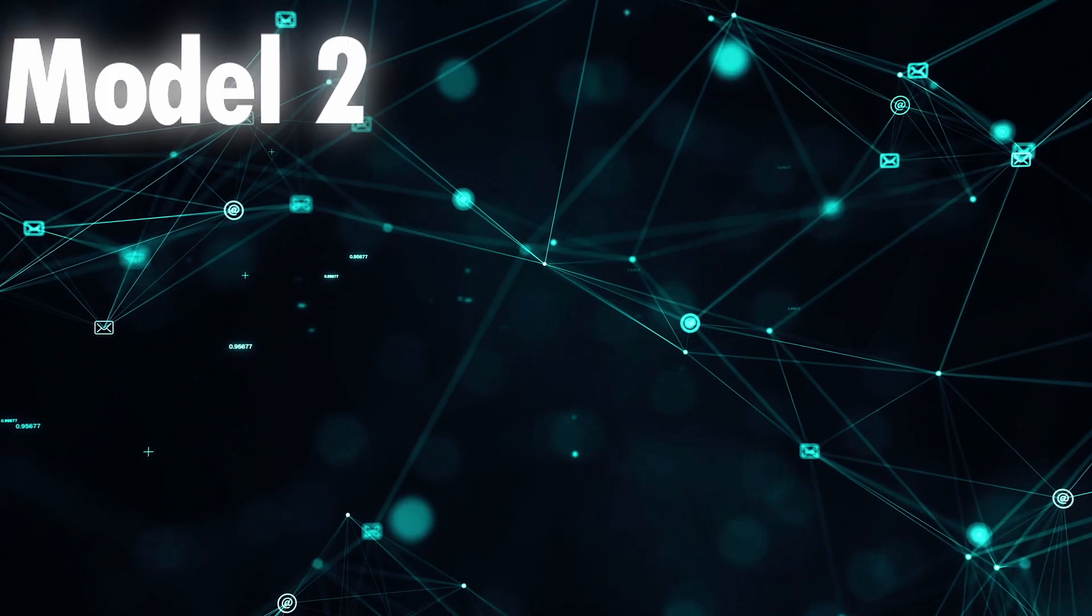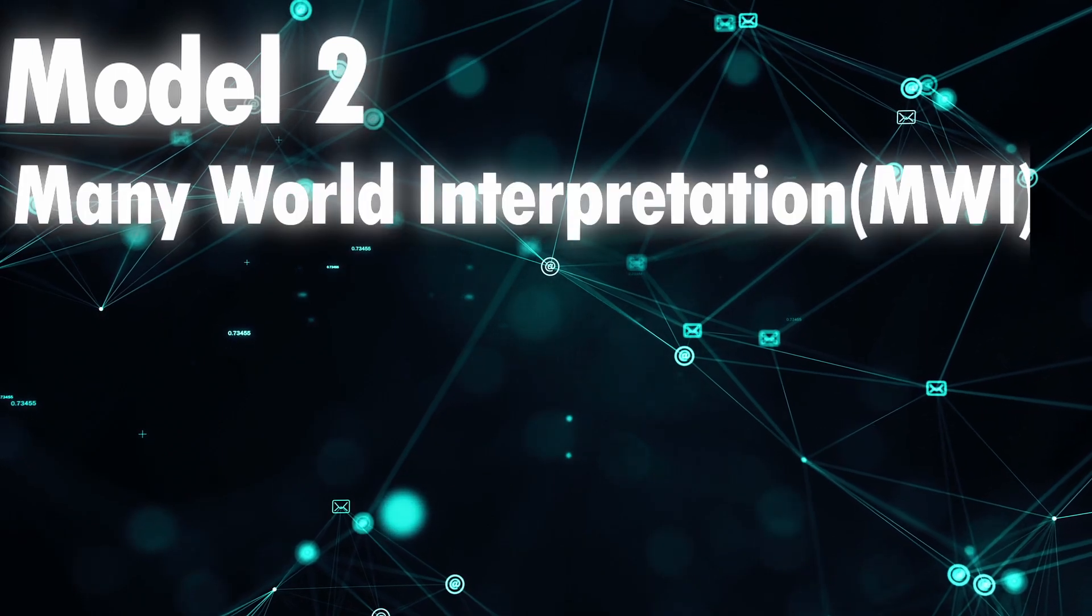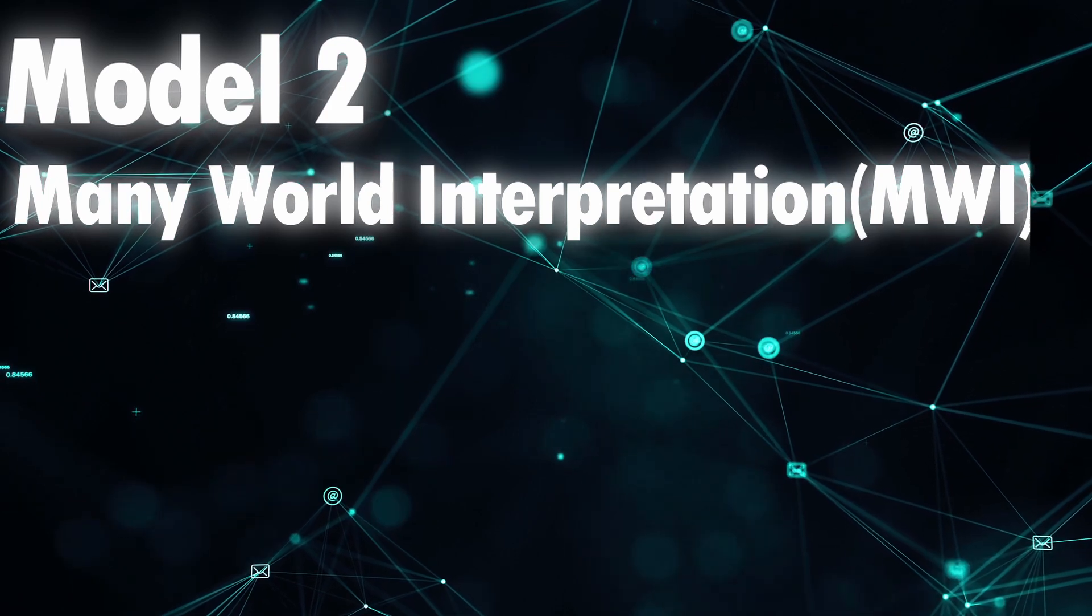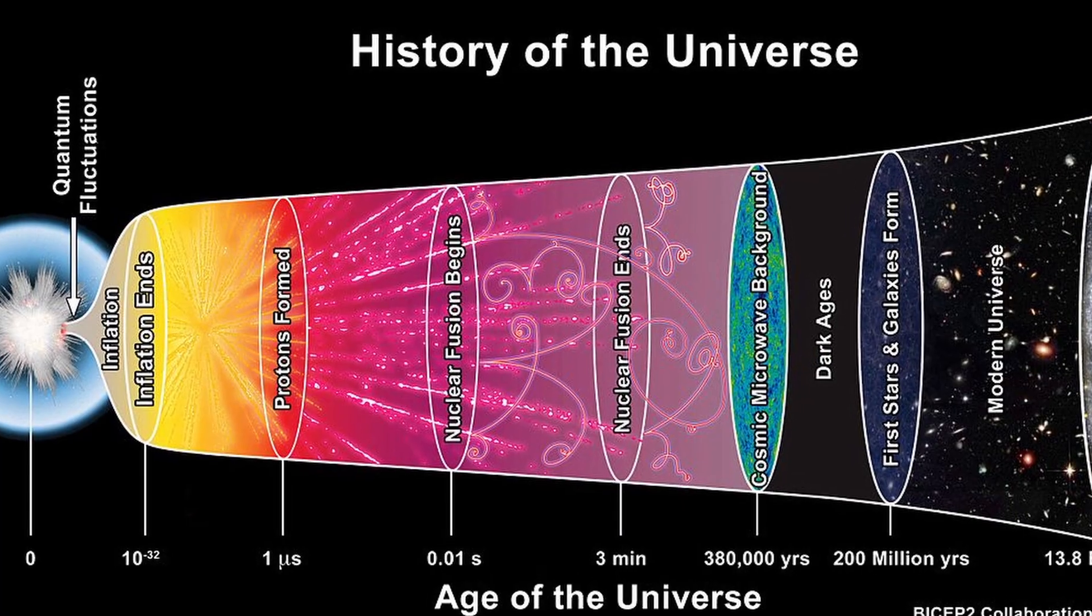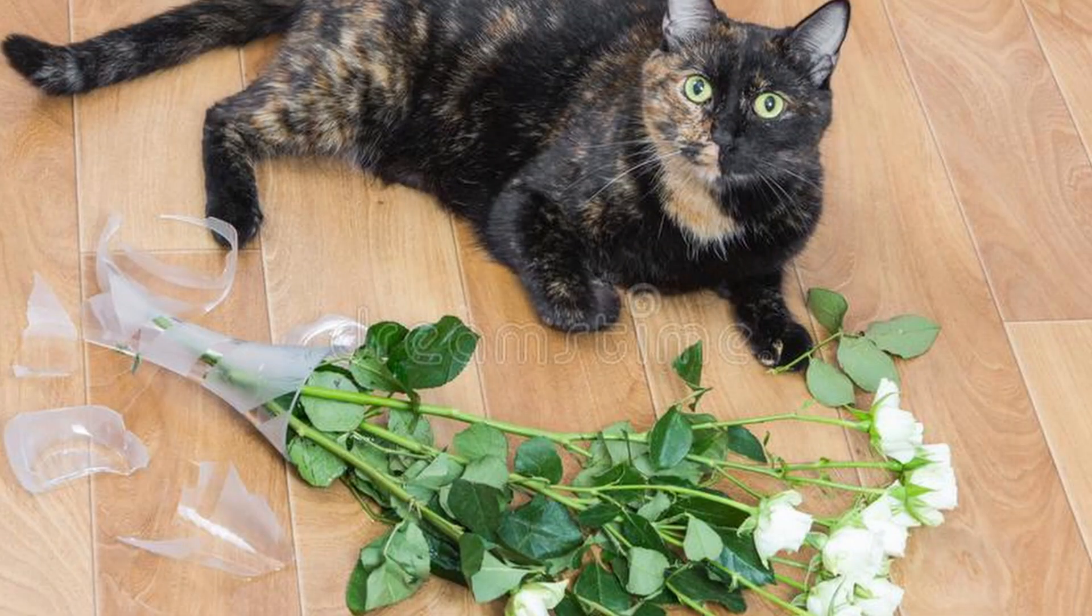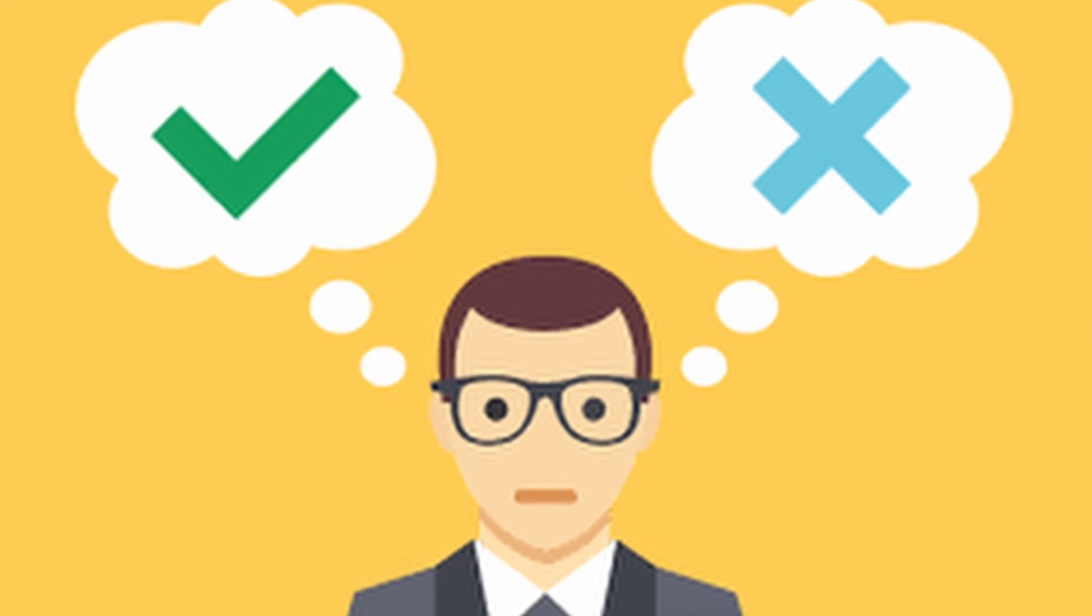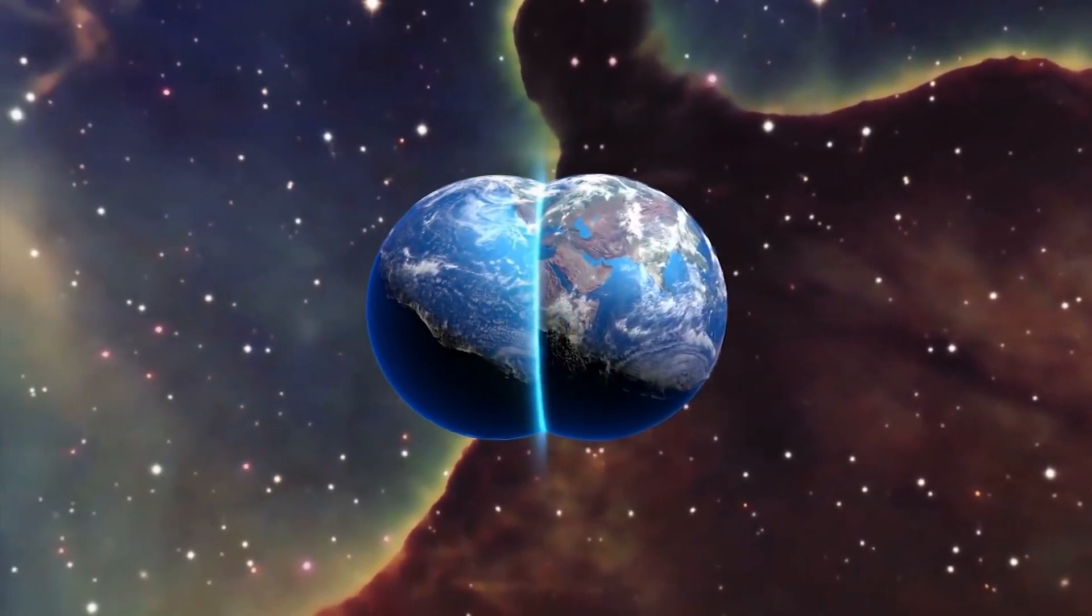Multiverse model number two is the many worlds interpretation of quantum mechanics. This theory makes an attempt at explanation by proposing that every possible timeline for the universe is real and every possible combination of particles and every kind of scenario that can happen does happen somewhere out there. While each time a new decision gives birth to infinite other possibilities and therefore dividing into multiple other universes.